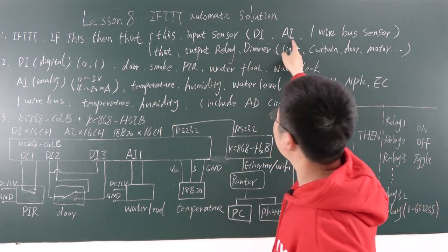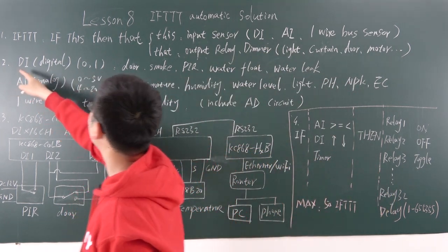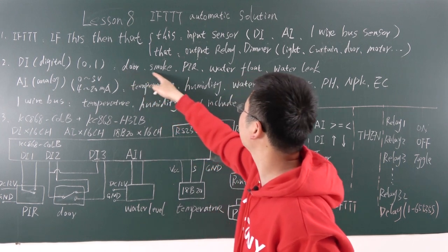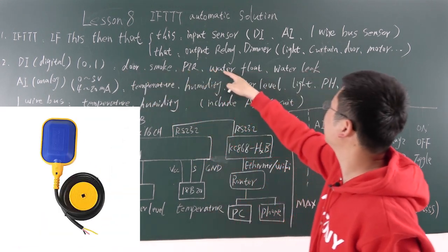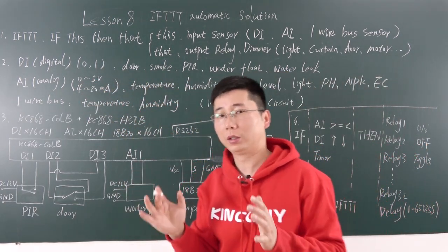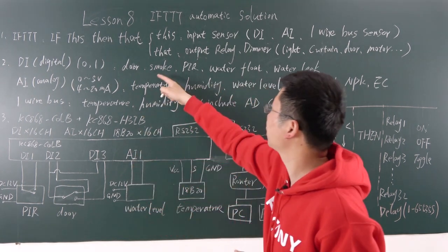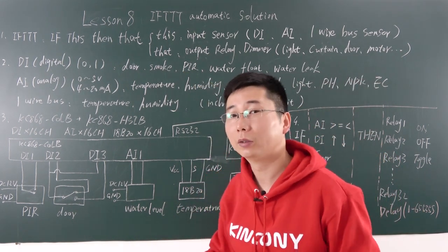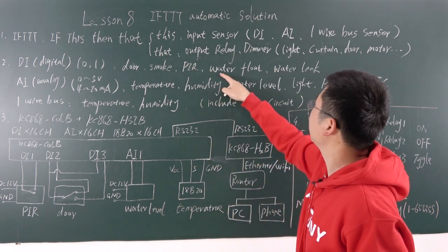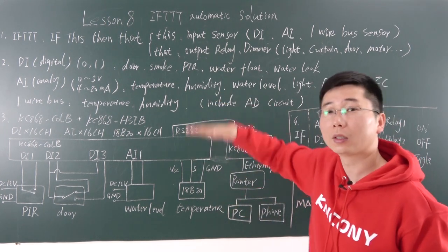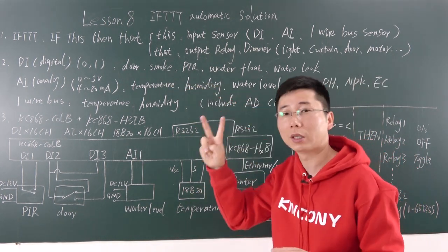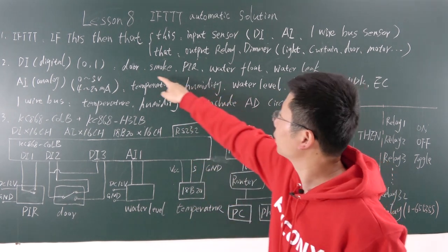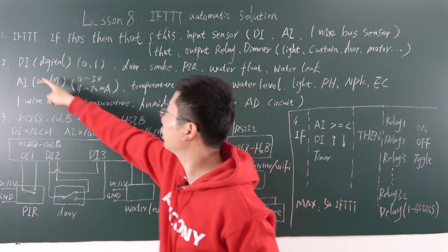So what is DI and AI? DI means digital input and AI means analog input. Digital sensor means only by one or zero, two states, just like this sensor - the door sensor, smoke sensor, PIR sensor, water float, and water leak. This means just two states, like the door open and close, whether it has smoke or no smoke, whether a person exists or not, the water level is high or low, or whether there's a water leak or not. So all these sensors have two states.